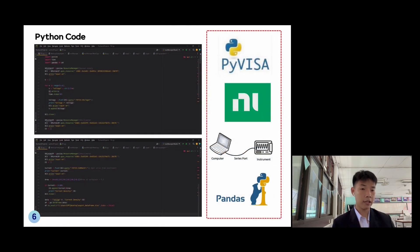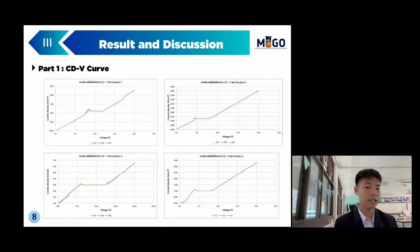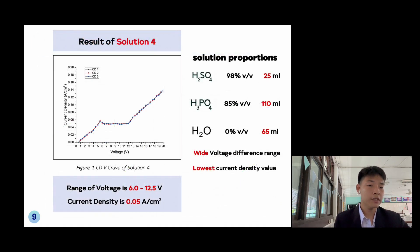In this slide, it is my Python code. And in this slide, it explains about surface morphology and analysis. Results and discussion part 1: current density and voltage curve. It is the result of solution 4. Range of voltage is 6 to 12.5 volts. Current density is 0.05 amperes per square centimeter. It is the lowest current density value and wide voltage difference range.